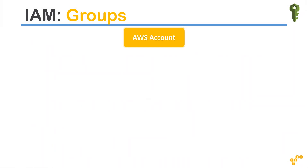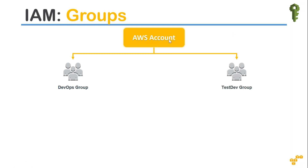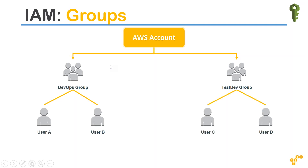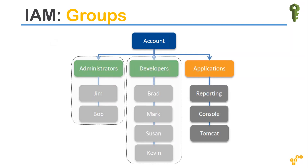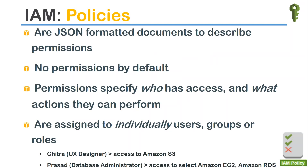When talking about groups, let us see how logically a group is built. Under an AWS account you can create a group called DevOps Group and another called Test and Dev Group, with users under each. The same hierarchy may not follow in your organization — you might have different structures. Another arrangement could be administrators, applications with their own roles and responsibilities, and developers, so you can create groups based on those categories.